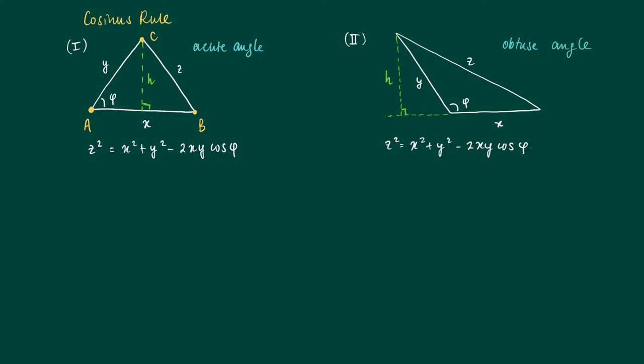We're going to prove this in two cases: first where the angle is acute, or when phi is larger, in which case we speak of an obtuse angle.